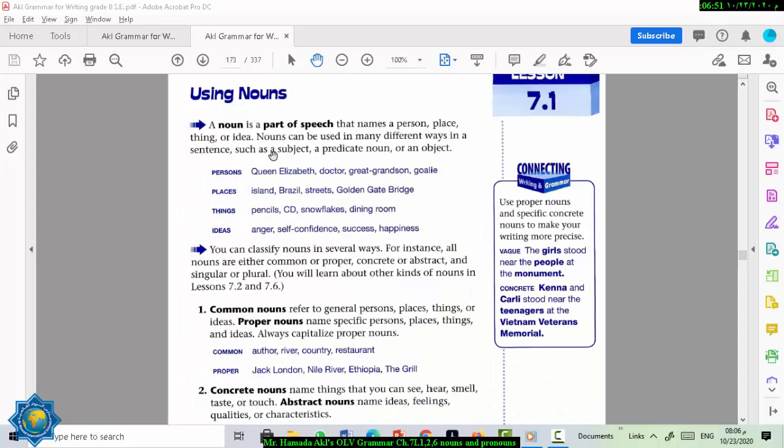You know that nouns are naming words. A noun is a part of speech that names a person, place, thing, idea, or animal. Nouns can be used in many different ways in a sentence, such as a subject, predicate noun, or an object.